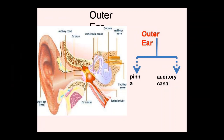All these cues are integrated by the brain to determine the location of the source of the sound. It is therefore difficult to localize sound with only one ear — both ears are needed for proper sound localization.